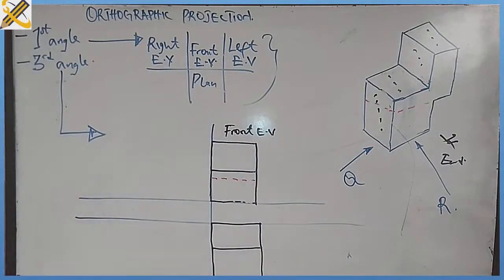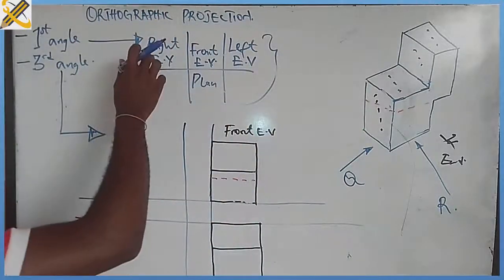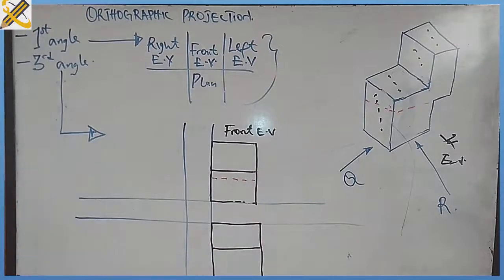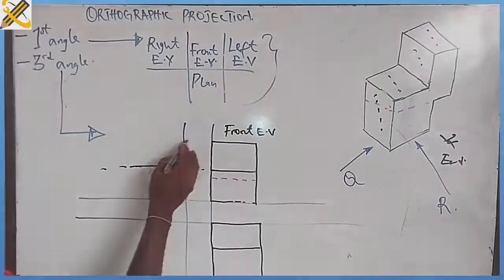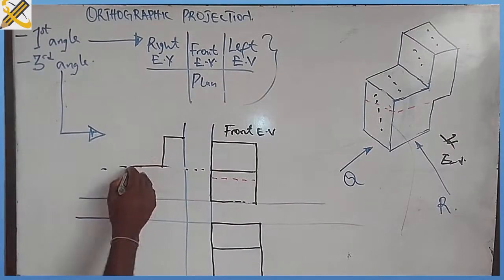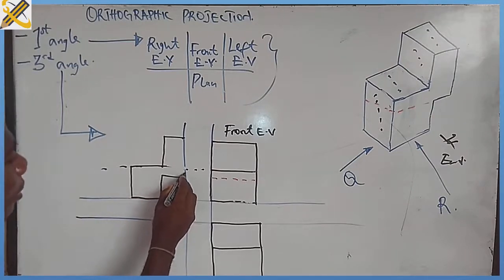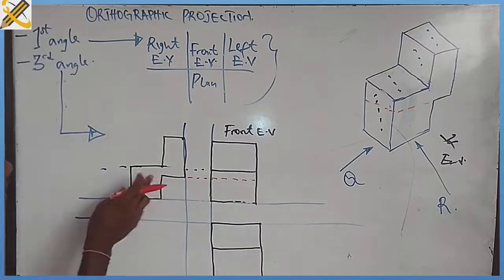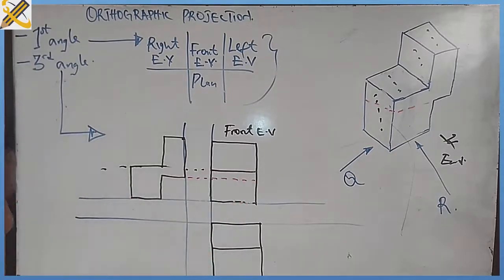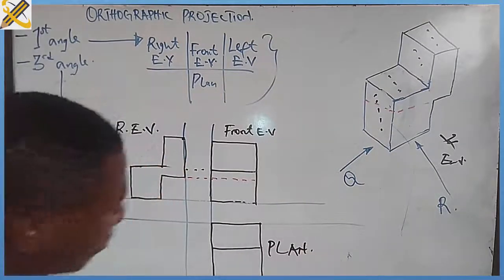Now for the end view — remember this end view is towards the right hand side, and in first angle our right side view is placed towards the left hand side. So this end view goes to this position. Projecting down, this area comes here, this area comes here, this area goes here — and you can see the correlation between this hidden view and this area. The area that is on your end view is actually what is hidden on the front view. So this is my right end view, and this is my plan.